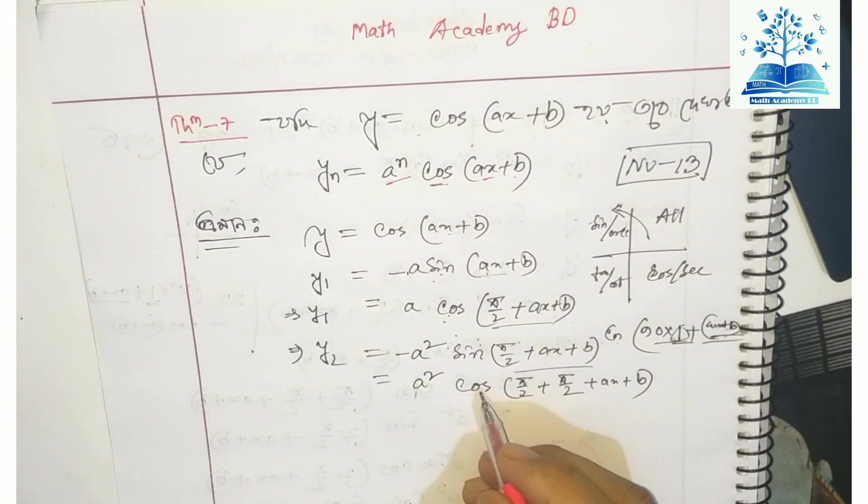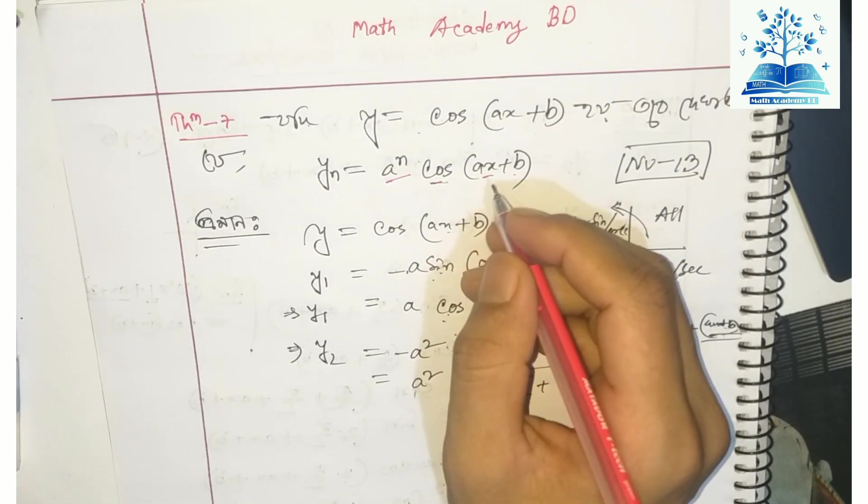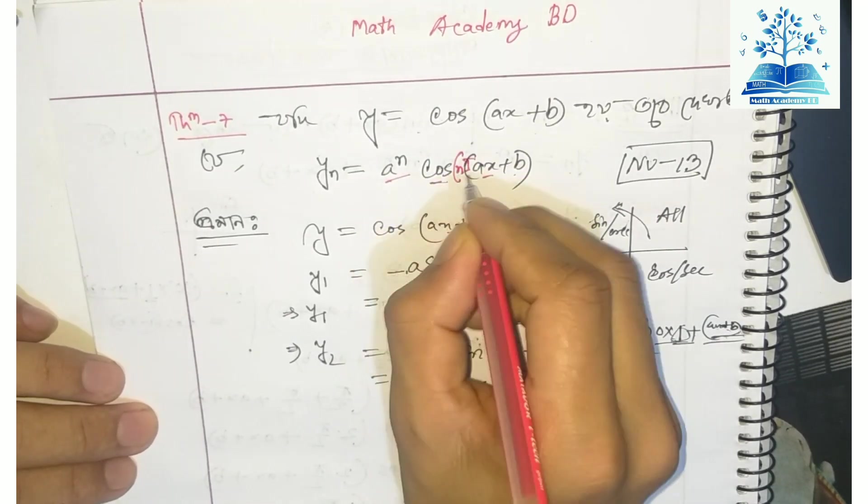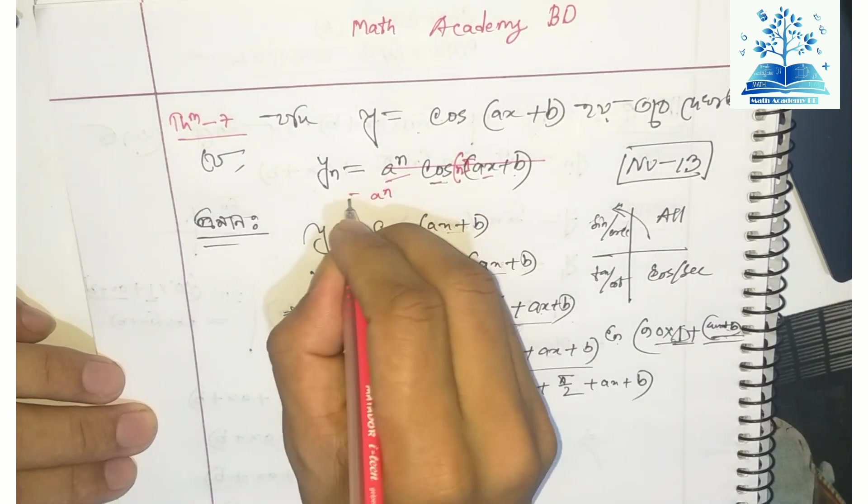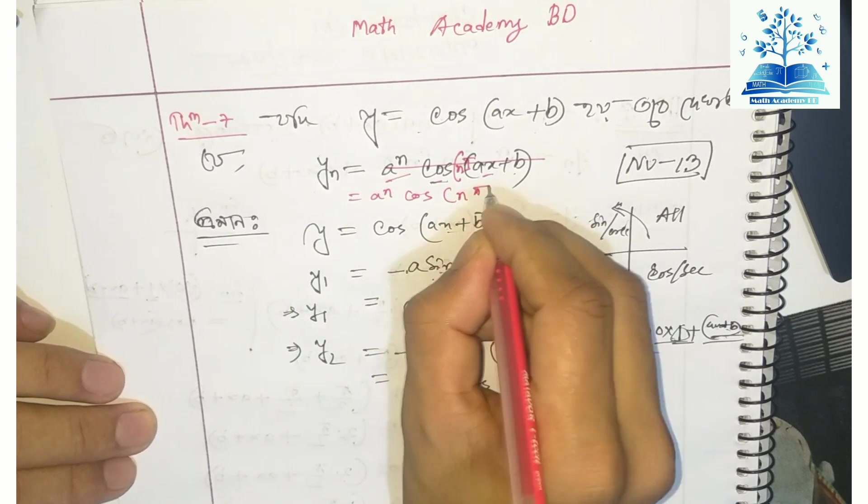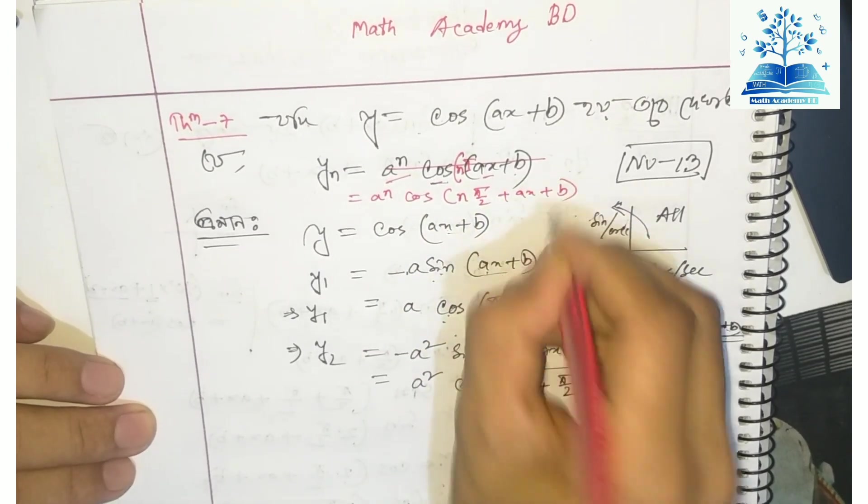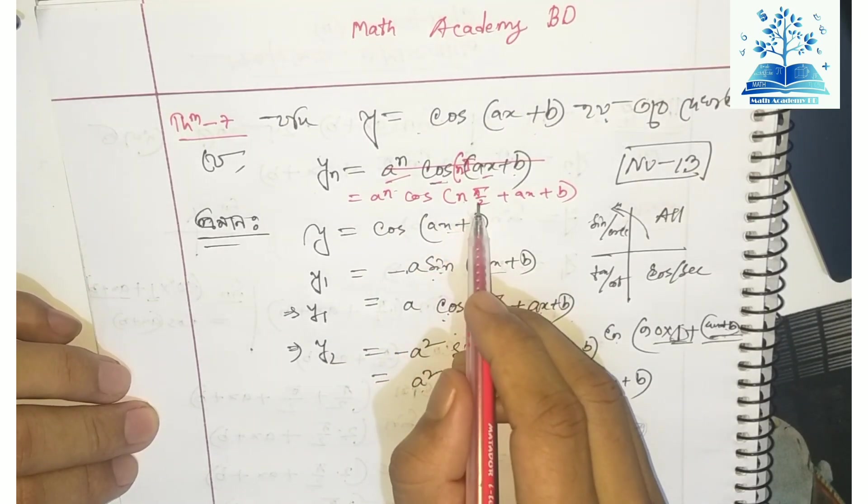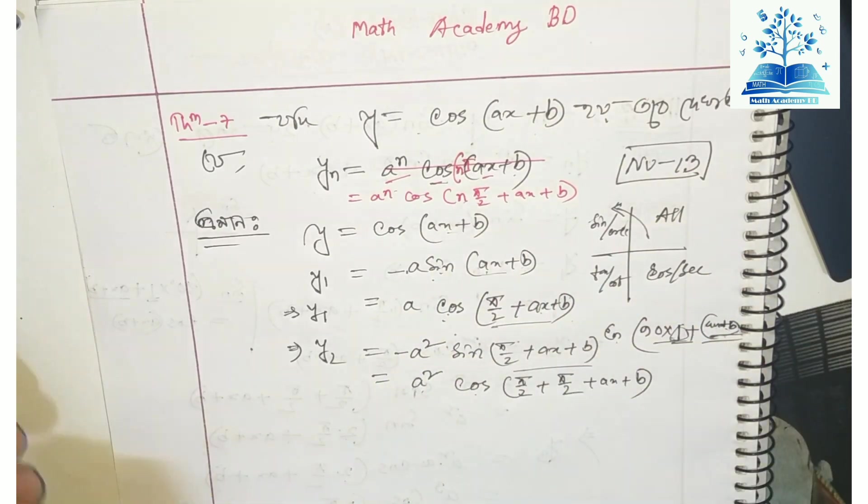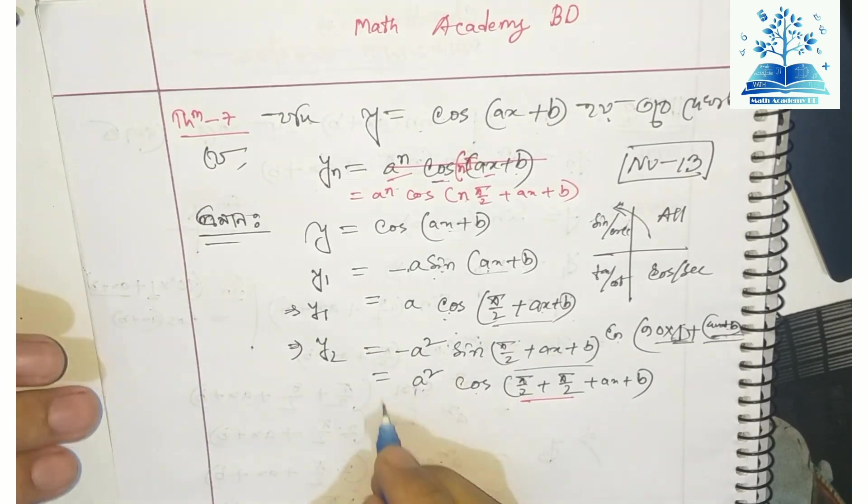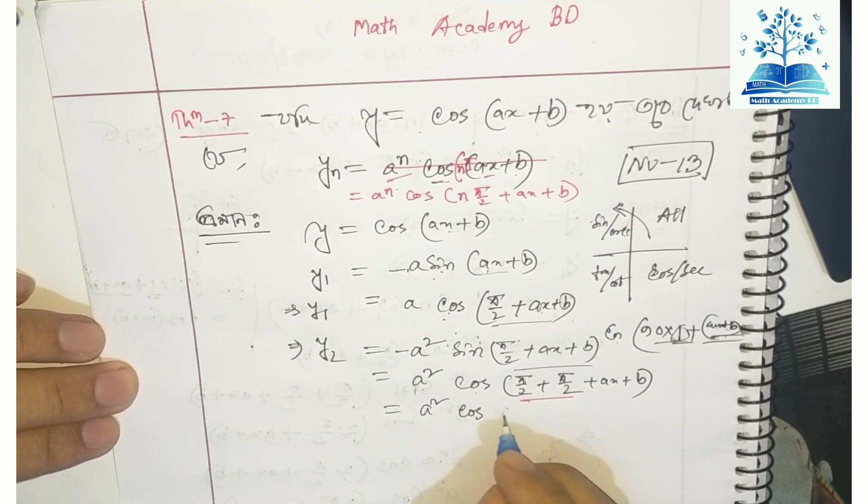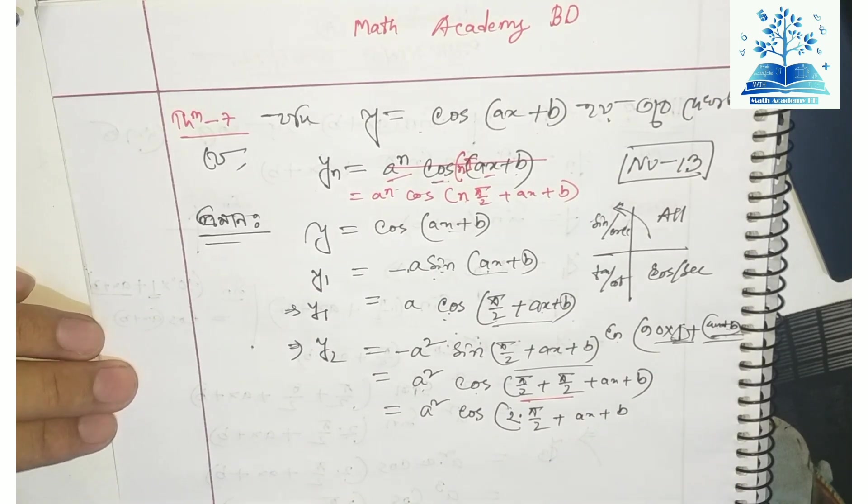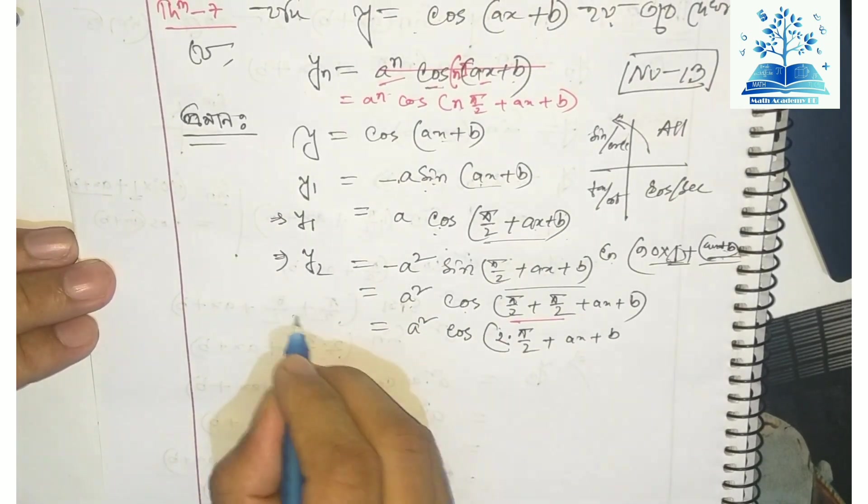Therefore, yₙ = aⁿ cos(n·π/2 + x + b). We can write cos with the π/2 multiplied by n. This gives us cos(nπ/2 + x + b).